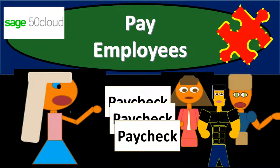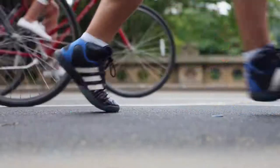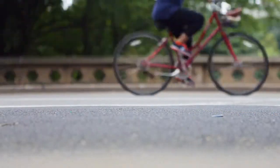In this presentation, we'll go through the process of recording the payment of employees within our accounting system. Note that we're not going to be processing the payroll through Sage 50 Cloud Accounting. We're going to be assuming that we have a third-party vendor, such as ADP or Paychex, that's helping us to process the payroll. We'll take their information and enter it into our system so it's in our financial statements. Let's get started with Sage 50 Cloud Accounting.